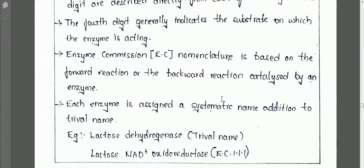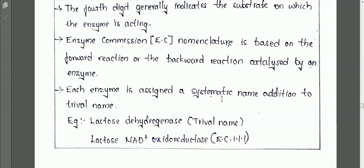Another naming system involves adding the suffix '-ase' to the name of the end product or the substance produced after enzyme catalysis. For example, fumarase is an enzyme which acts on a particular substance to form the end product fumarate. Based on the end product name, enzymes can also be named.